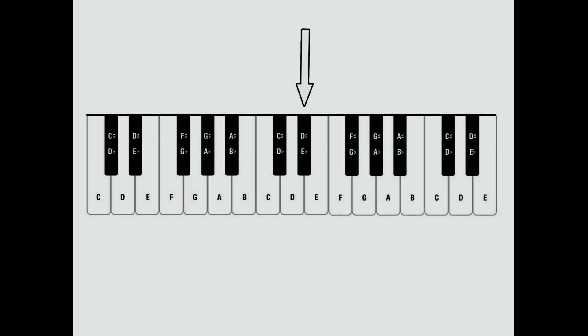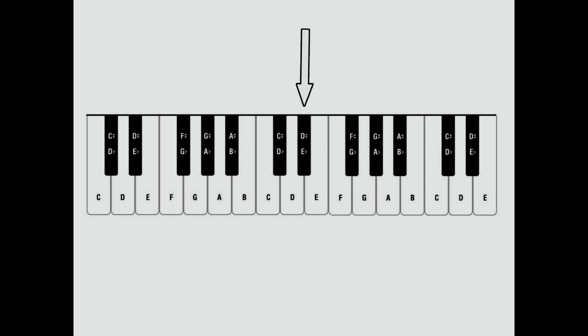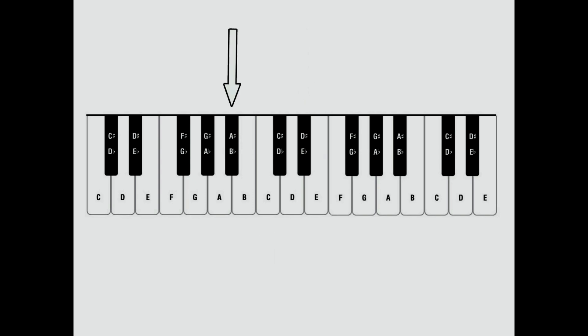If we were going down and started on E, we would go E, E flat, D, D flat, C, B, B flat. Notice there is no black key between B and C and between E and F, which means there are no sharps and flats between those notes. Remember: there are no sharps and flats between B and C, and E and F.